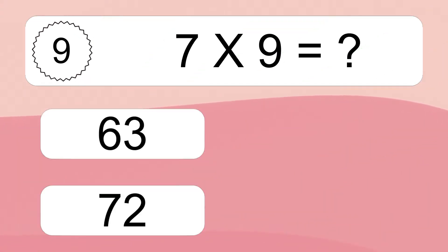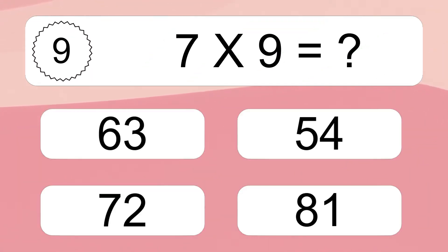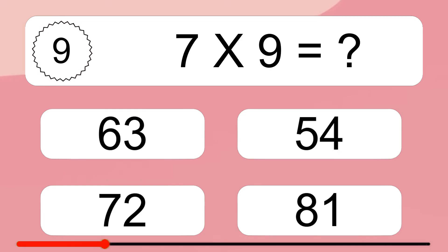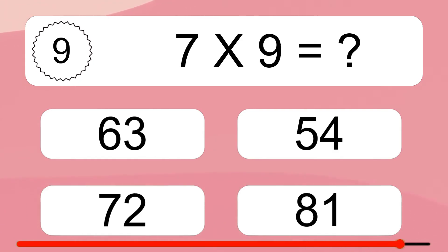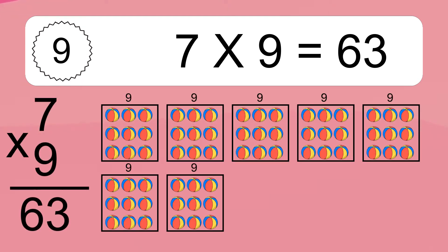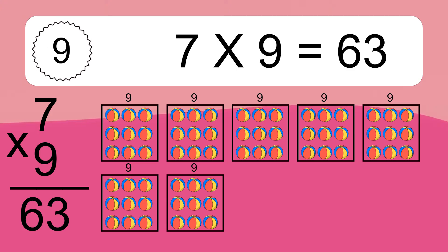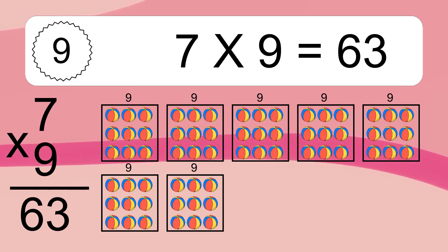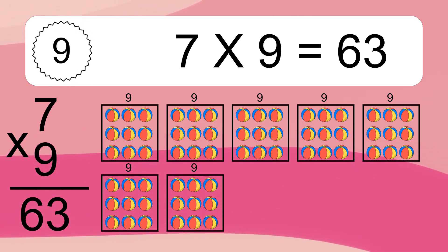7 times 9 equals what? 7 times 9 equals 63. We have 7 boxes, and each box has 9 colorful balls inside. If you count all the balls in all the boxes together, you will have 7 times 9 balls. This equals 63 balls.